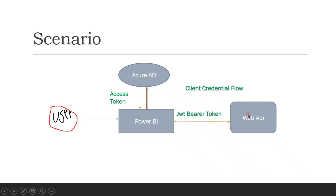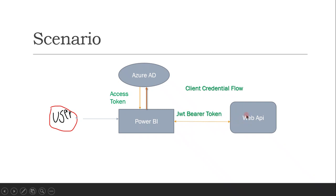We need to provide an access token — some kind of authentication is implemented on the web API side. Let's assume the web API is connected with Azure Active Directory for security. So we need to access that API endpoint from Power BI. We need to generate an access token, send a request to Azure AD, get the access token, and pass it as a bearer token in the header to the web API so it can authenticate and authorize the user.